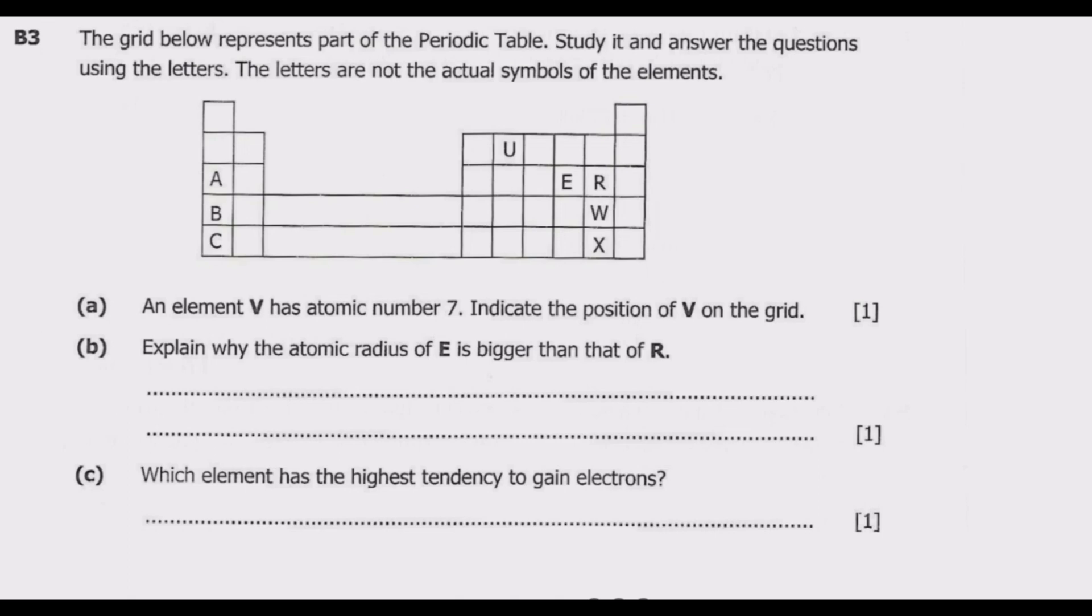The grid below represents part of the periodic table. Study it and answer the questions using the letters. The letters are not the actual symbols of the elements. So we have that extract from the periodic table. Question A: An element V has atomic number 7, indicate the position of V on the grid.